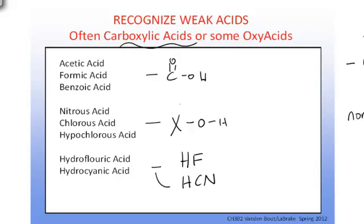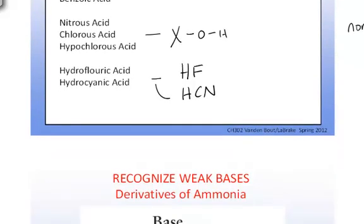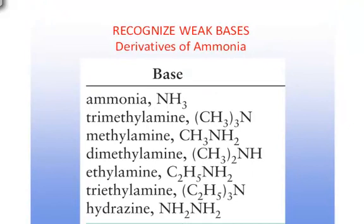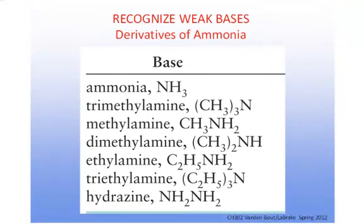So, you'll need to be familiar with these, but not necessarily memorize the formulas for all of these. Just recognize that they're not strong acids. And then the weak bases are typically derivatives of ammonia. So, you should memorize the formula for ammonia, I think you probably already know it, NH3. And then derivatives, meaning that the hydrogen's been replaced with some other side chain. In this case, trimethylamine, three methyl groups attached to a nitrogen, etc.